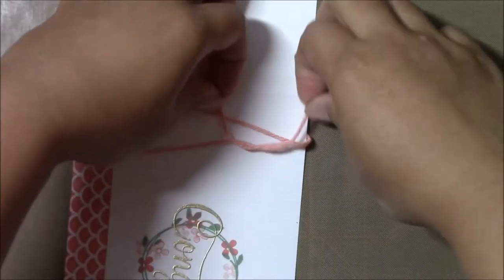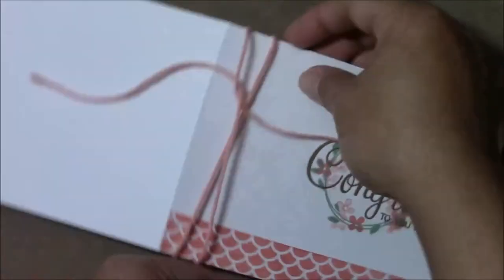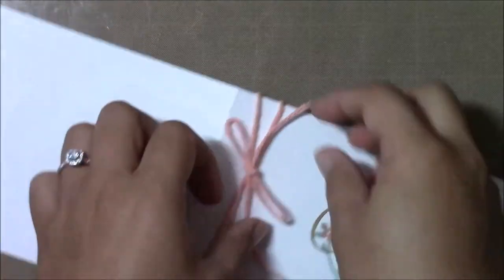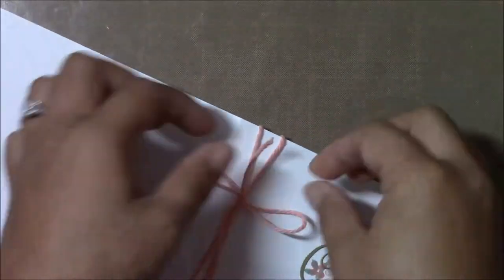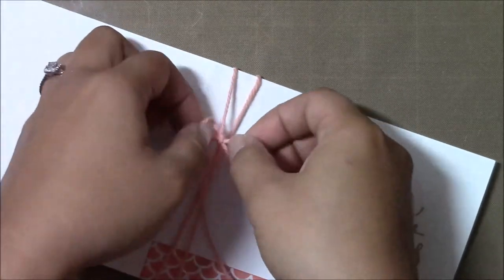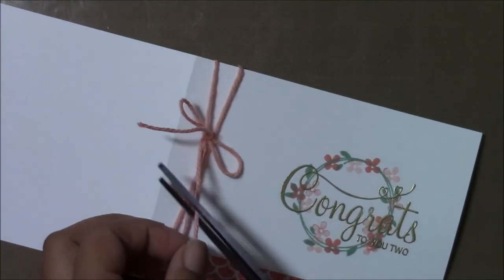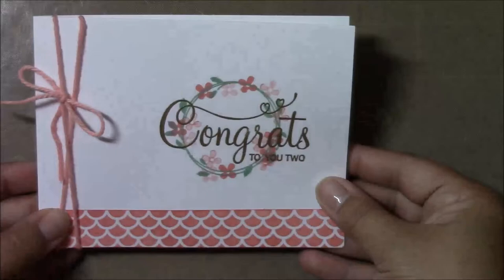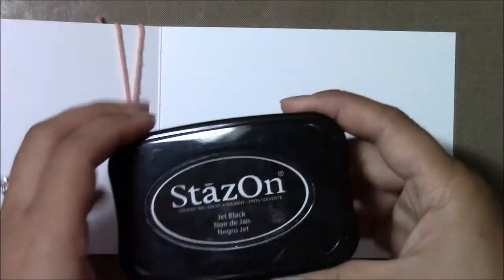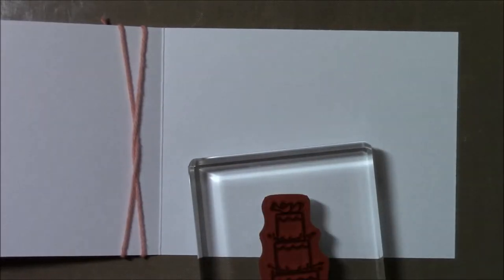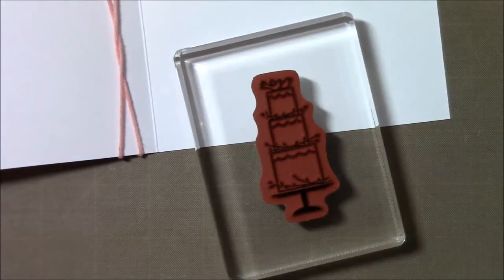And once I'm done, I'll go ahead and trim that. I usually don't work on the inside of the card. I like to save that space for writing, but since this is such a simple card, I decided to go ahead and stamp something on the inside as well. So after I trim my twine here, I'll go ahead and turn it and work on the inside. I'm going to use some Stazon ink to stamp this really pretty matching coordinating cake. And I used Stazon because I didn't want it to bleed. I'm going to be using Stampin' Up's blender pen.